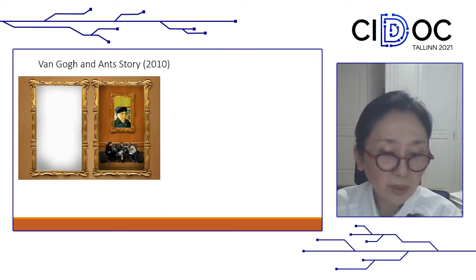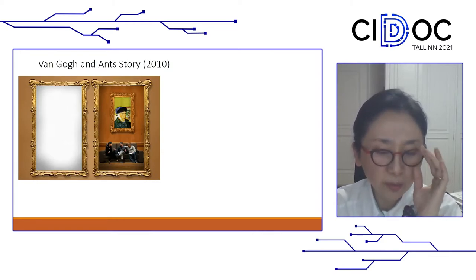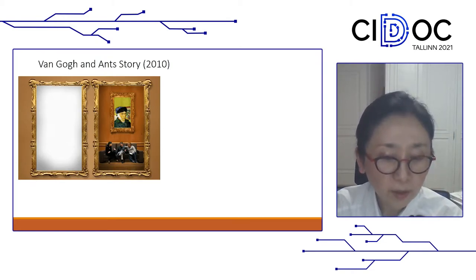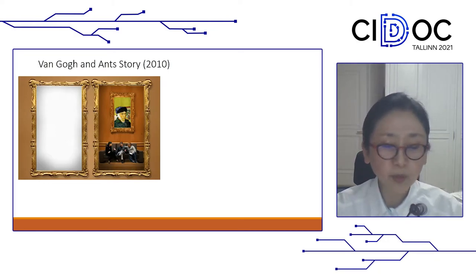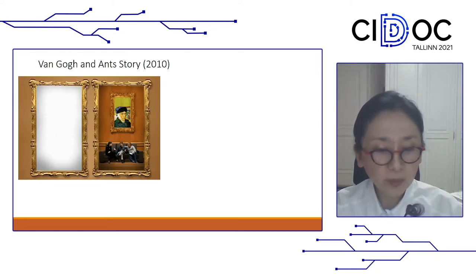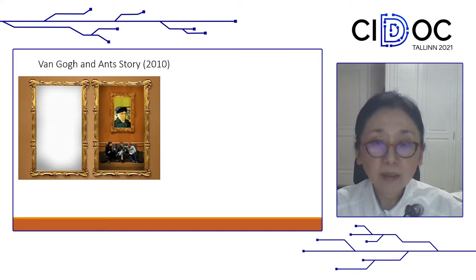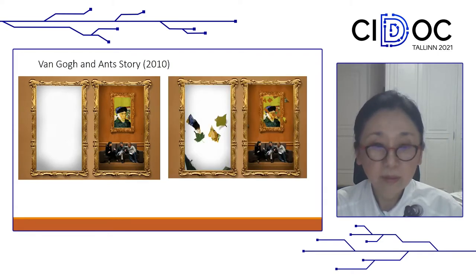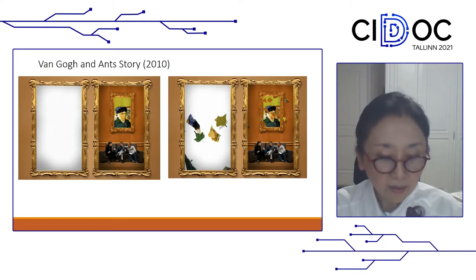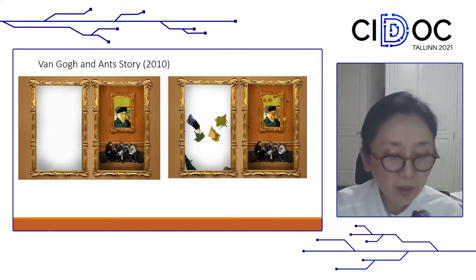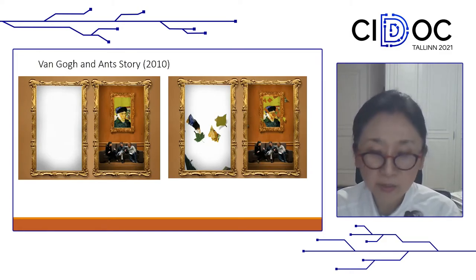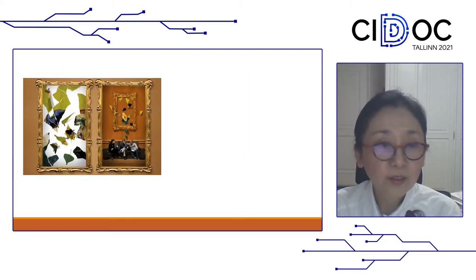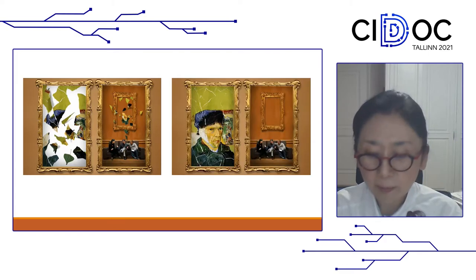Lee Lee Nam also playfully intervenes with Western masterpieces. Here, one empty frame is placed next to another with Van Gogh's self-portrait inside a museum setting. It occurred to him that Van Gogh might feel claustrophobic, locked up in a museum room for centuries, and he decided to free him from the confined setting. To carry out this task, he involves the ants — little ants that move the pieces, tearing the painting piece by piece and moving it to the adjacent frame. The ants work very hard, and finally the mission is accomplished: Van Gogh is out of the room.